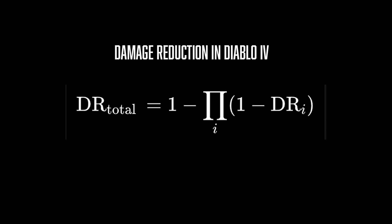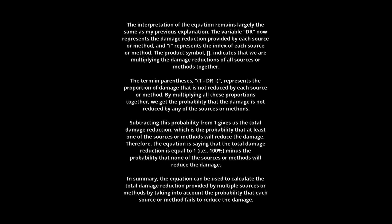First, let's explain this formula. ChatGPT does a very good job and remembers your questions. The variable DR represents the damage reduction provided by each source or method, and i represents the index of each source or method. The product symbol, the big pi that you see there, indicates that we are multiplying the damage reductions of all sources or methods together. This is compared to sigma, which is actually addition—here we are multiplying it.